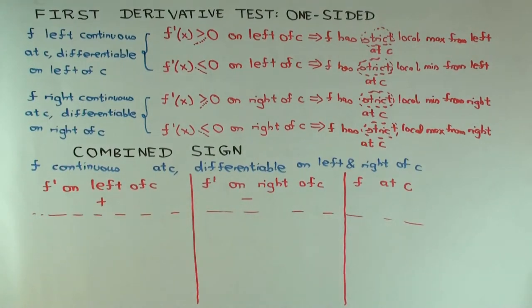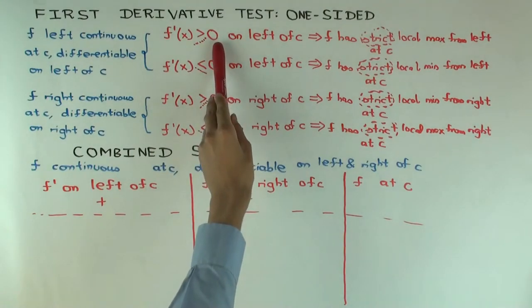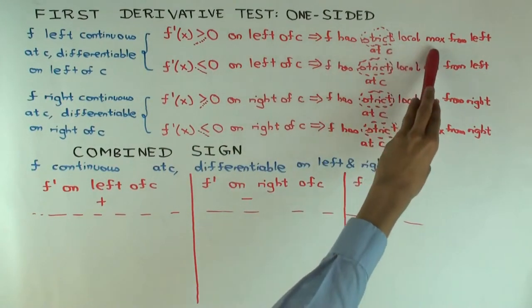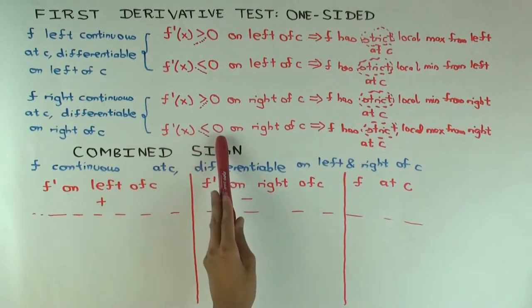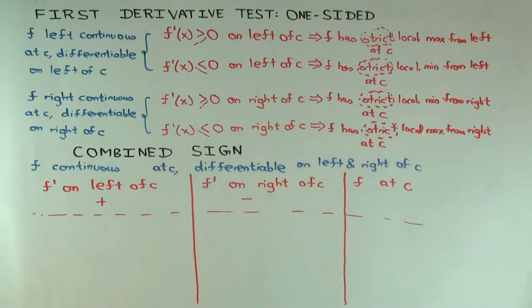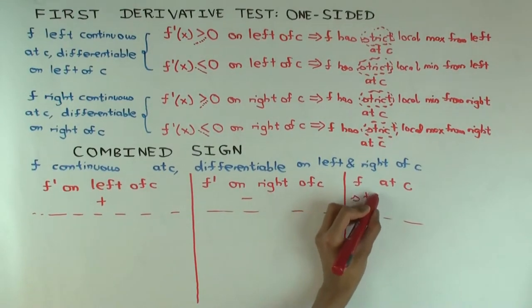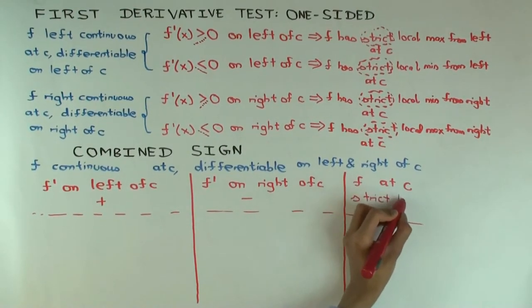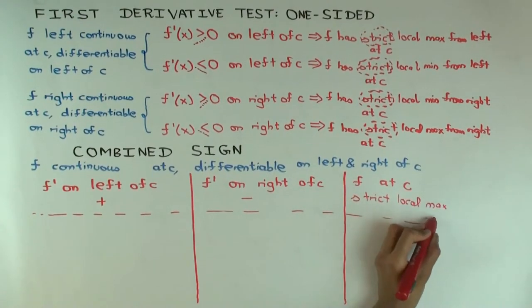So let's just see that line screen. Positive and negative. What can you say about f at c? Well, f'(x) is positive on the left of c. Then what does that mean? f has a strict local max from the left. f'(x) is negative on the right of c. What does that mean? f has a strict local max from right. From the right. So when you combine those, what do you get? Local max. Strict local max. Two-sided, right? So by the way, if I don't write anything, I mean two-sided. So you have strict local max.